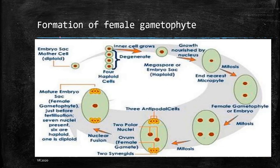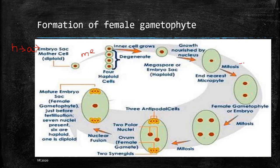Now let us talk about the formation of a female gametophyte. The female gametophyte develops from an embryo sac mother cell. The embryo sac mother cell is derived from the hypodermis. One of the cells forms the archesporangia cell, which further forms the embryo sac mother cell. This is diploid and undergoes meiosis, giving rise to four haploid cells. Now all of these haploid cells are not required — only the cell nearest to the nucellus, towards the center, is kept, and all the other cells are aborted.